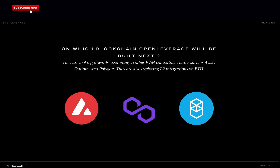On which blockchain Open Leverage will be built next: they are currently deployed on Ethereum, BNB, and KCC chains. They are looking towards expanding to other EVM-compatible chains such as AVAX, Phantom, and Polygon. They are also exploring L2 integration on Ethereum.